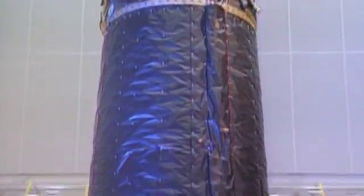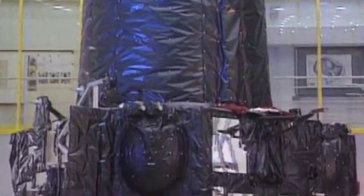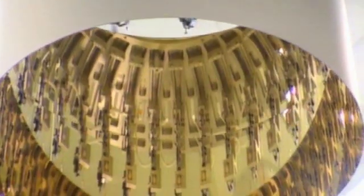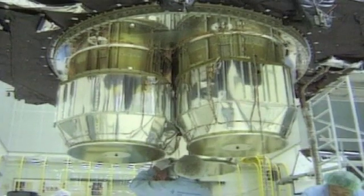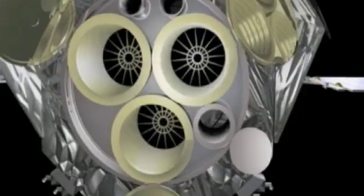XMM-Newton is the largest space observatory ever launched by the European Space Agency. Its name stems from the design of its 170 cylindrical X-ray multi-mirrors, wafer-thin, gold-coated, nested in each other and making up the telescope's three eyes.